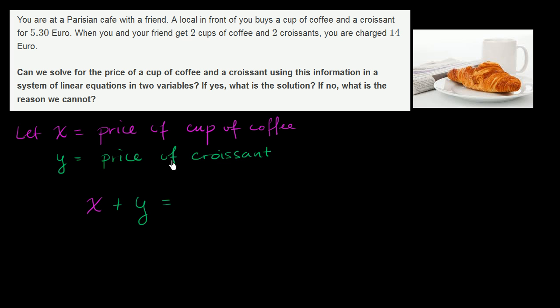and it cost 5.30. So this is the amount that he paid, 5.30 euro. So this is what the local, this equation describes what happened to the local. Bought one cup of coffee, one croissant, paid 5.30.